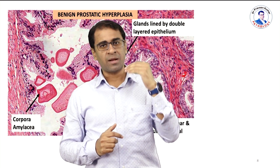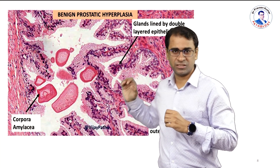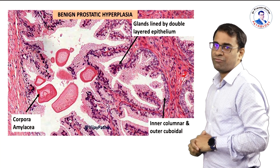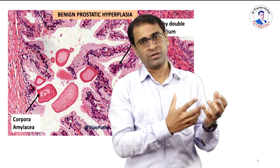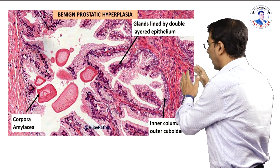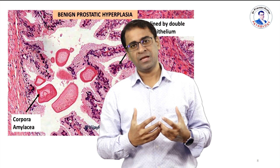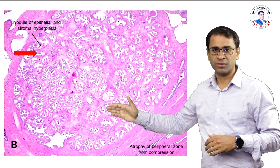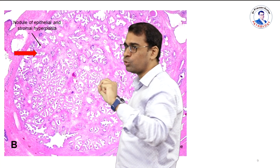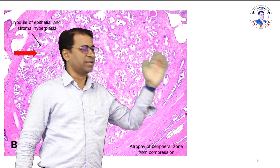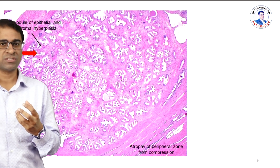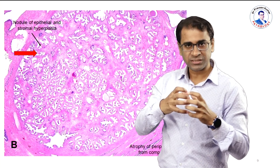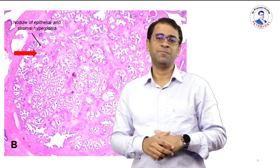In BPH, what happens is the increased amount of testosterone becomes 5-dihydrotestosterone (5-DHT). Because the stromal cells — this fibromuscular stroma — respond to testosterone and 5-DHT, when the patient has an increased amount of androgen, mostly 5-DHT, it keeps acting on the stroma. The stroma has decreased apoptosis and they keep accumulating. This increased proliferation and decreased apoptosis increases the number of glands as well as stroma. So remember, BPH is an increase in glands and also an increase in stroma. It involves the transitional zone, which is just around the urethra, compressing it and causing symptoms like increased hesitancy, urgency, and frequency.